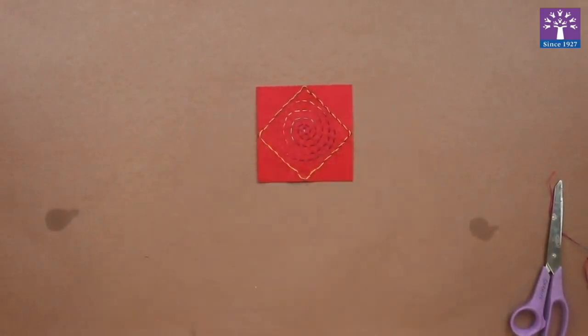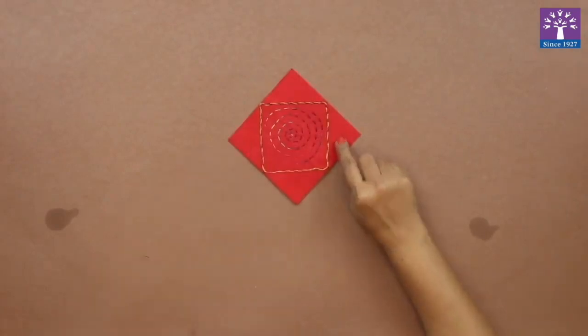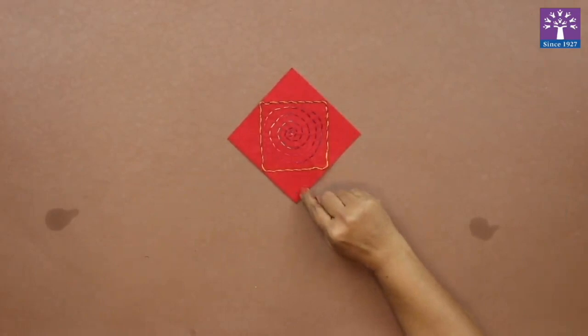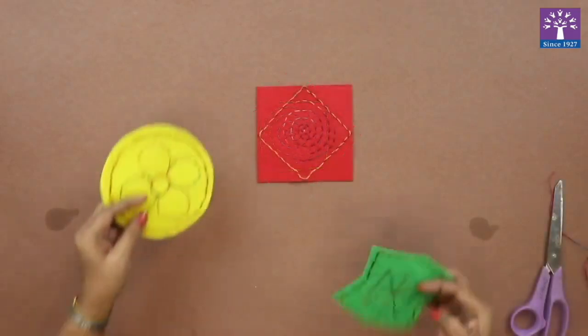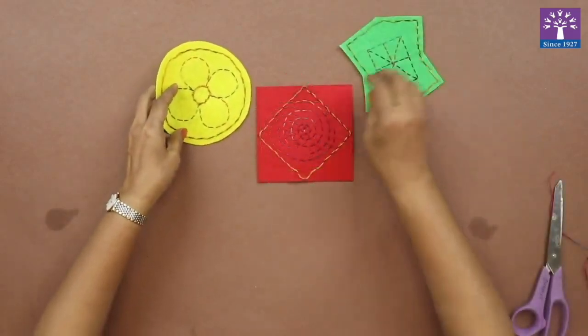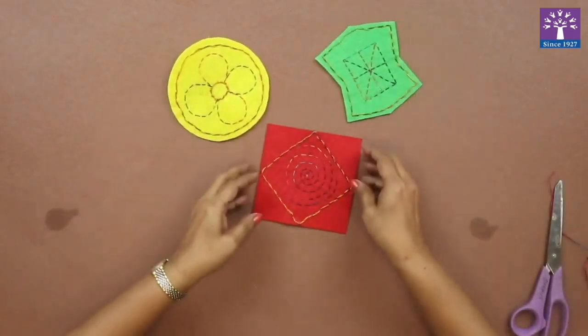Our felt cloth coasters are now ready. If you feel that this is empty and if time allows, then you can add more designs with the running stitch to make it more decorative. You may try these with different shapes and colors.